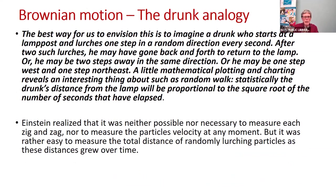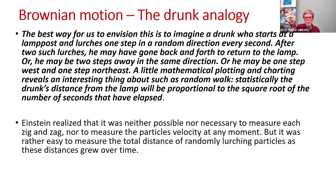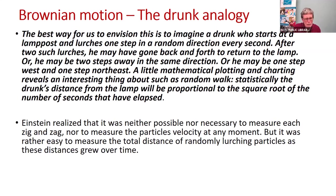The drunk analogy: Einstein imagined a drunk who starts at a lamppost and lurches one step in a random direction every second. Every so often he might have gone back or forth to return to the lamp, or be two steps away in the same direction, or one step northeast. A little mathematical plotting reveals an interesting thing about such a random walk: statistically, the drunk's distance from the lamp will be proportional to the square root of the number of seconds that have elapsed. It's a play toy, but an interesting way of putting it.